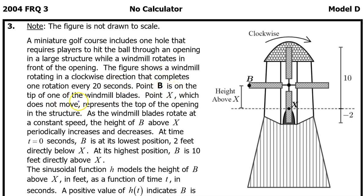Point B is on the tip of one of the windmill blades. Point X, which does not move, represents the top of the opening in the structure. As the windmill blades rotate at a constant speed, the height of B above X periodically increases and decreases.